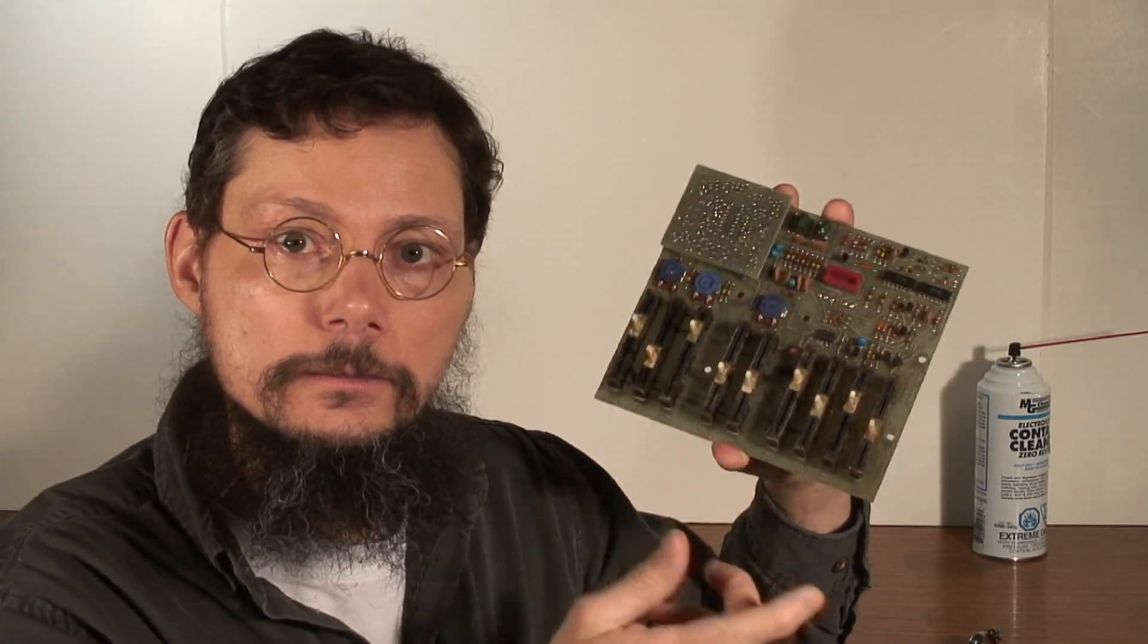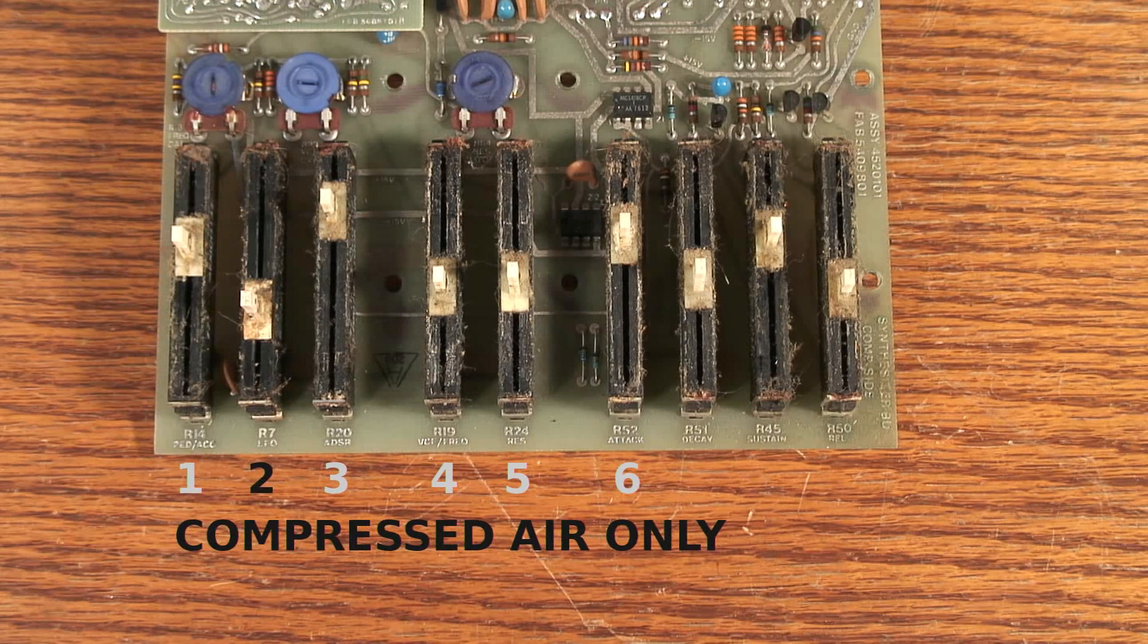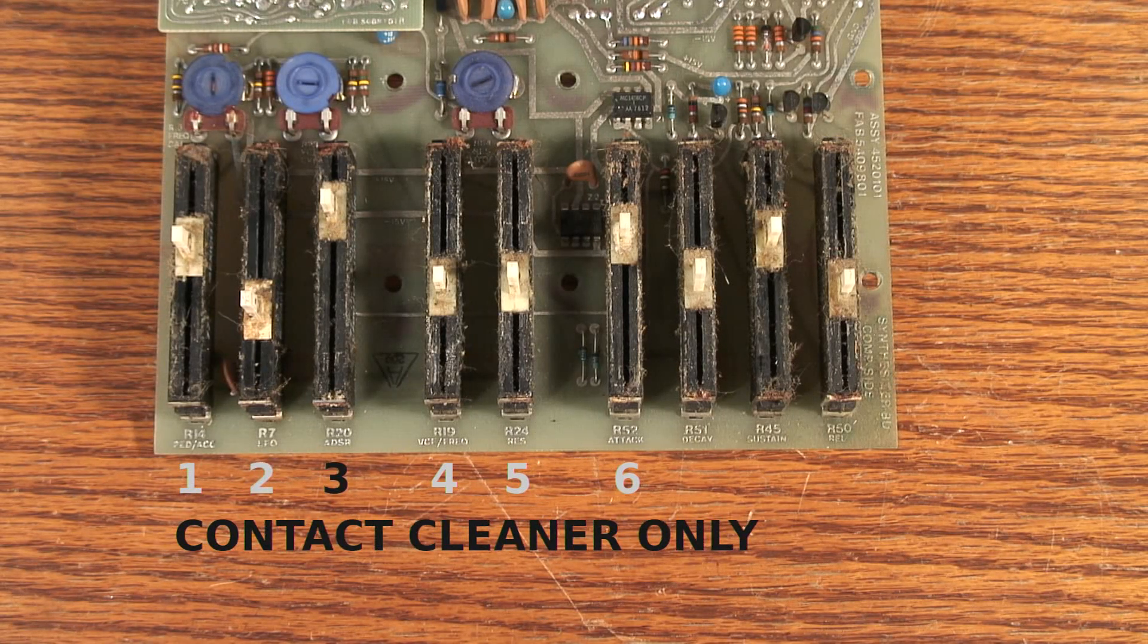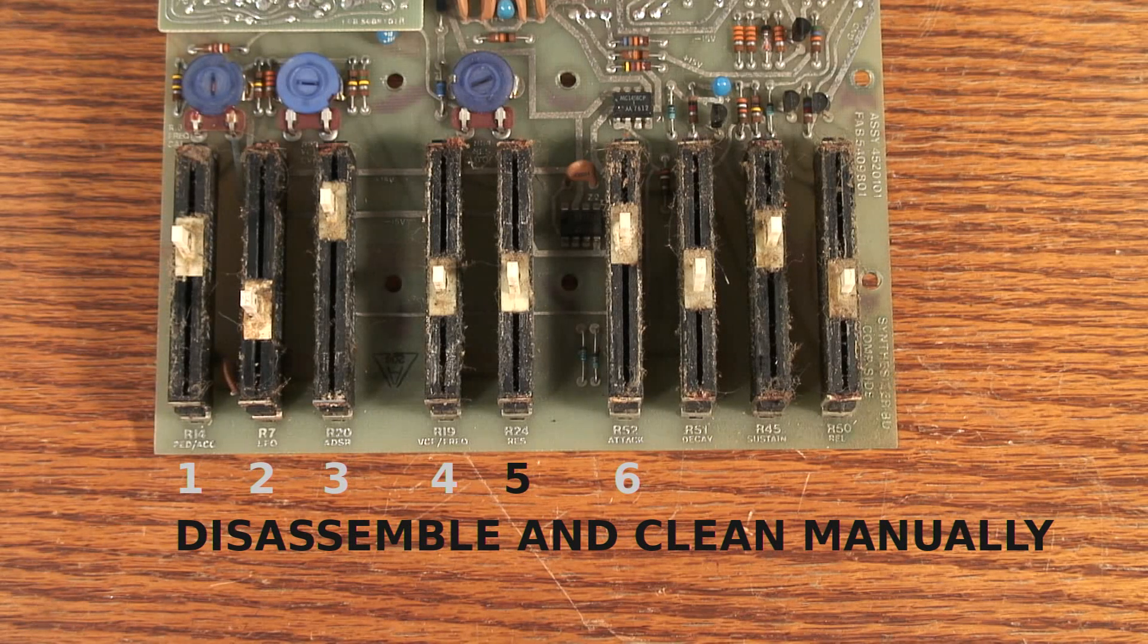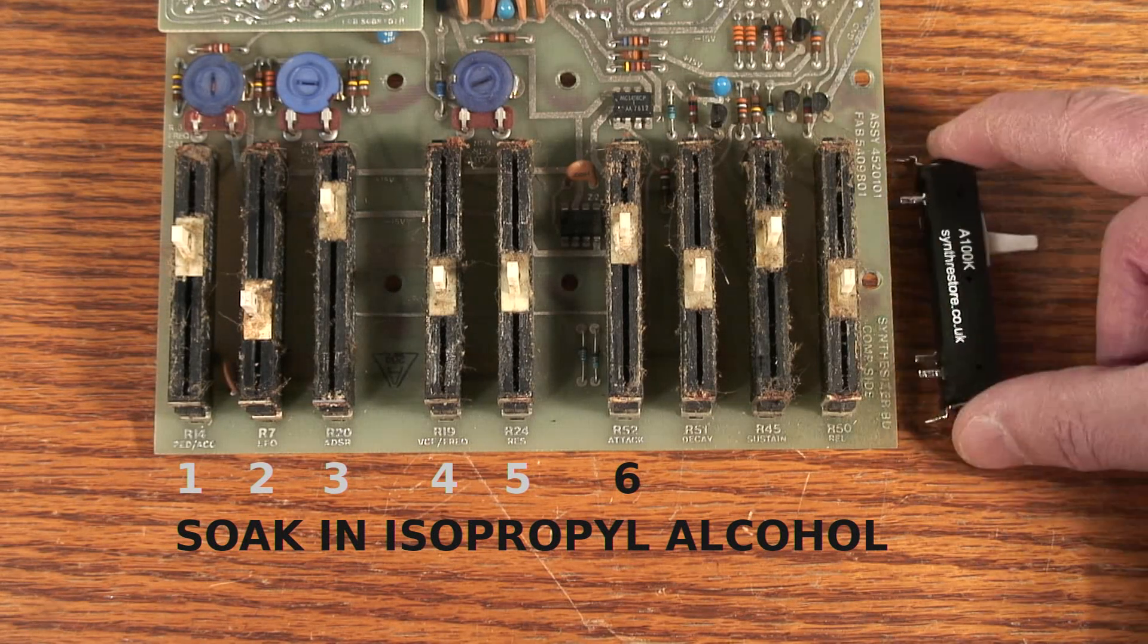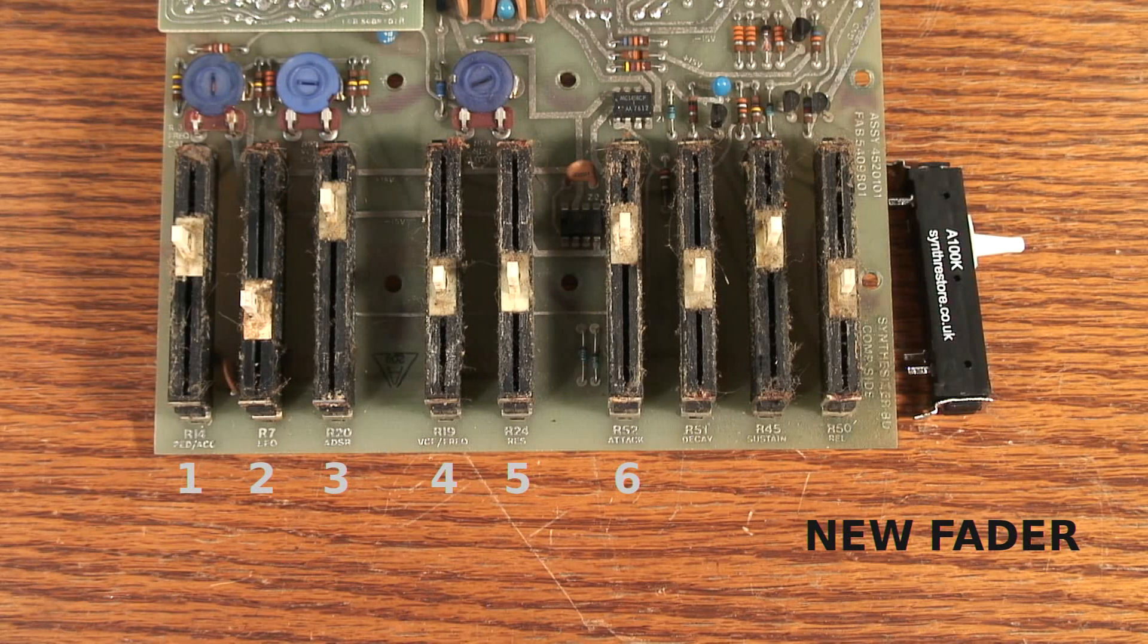I'll give you a close-up of the board. I'll leave the first fader as is for comparison, and I'll clean the second fader with compressed air only, the third one with contact cleaner only, the fourth one with contact cleaner and air. For the fifth one, I'll open it up and manually clean the inside with isopropyl alcohol. For the sixth one, I'll keep it closed, but I'll soak it in isopropyl alcohol. And for the last one, we'll compare it to a new fader. This is actually an aftermarket fader from Synth Restore in the UK, but it's about as close as we can get to a new fader.